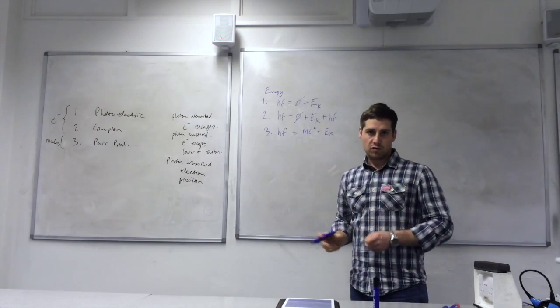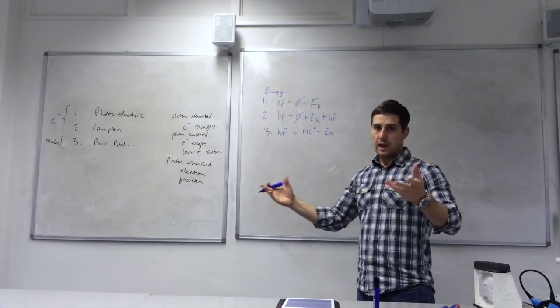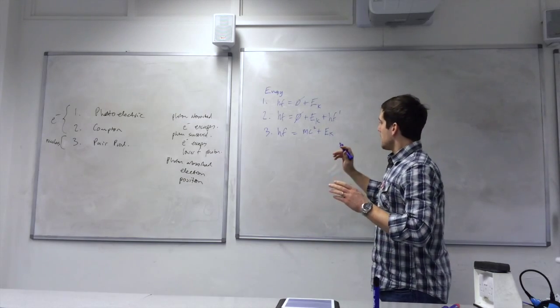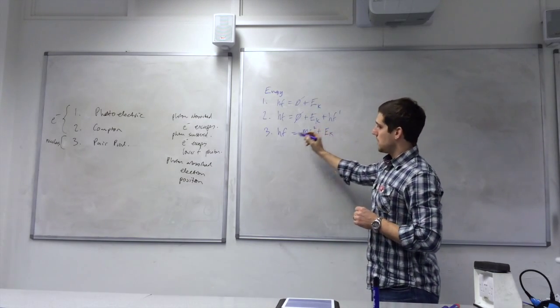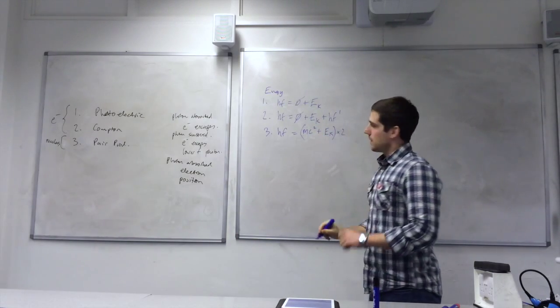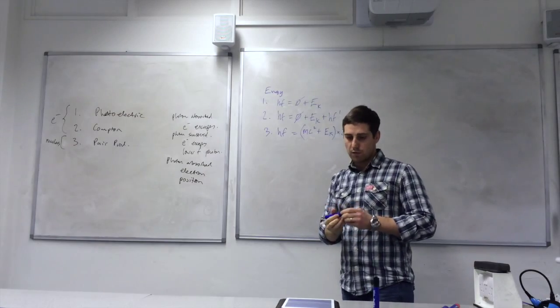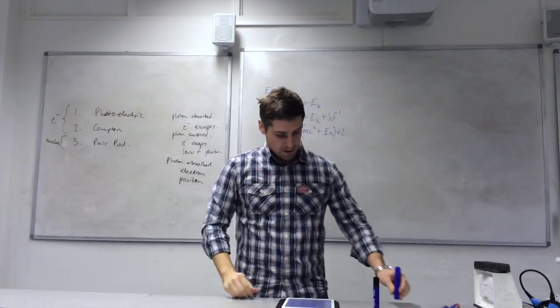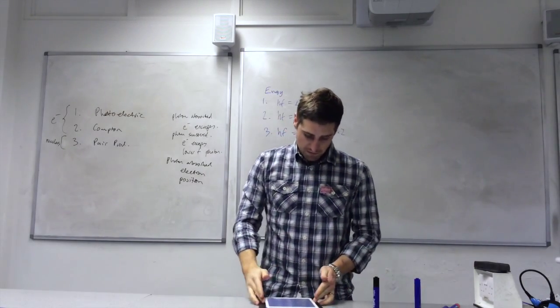So, when the electron and positron are created, they move away from the nucleus, so they have kinetic energy. Because the electron and positron have the same mass, those terms grouped together there are multiplied by two. So, that's what happens in terms of the energy.